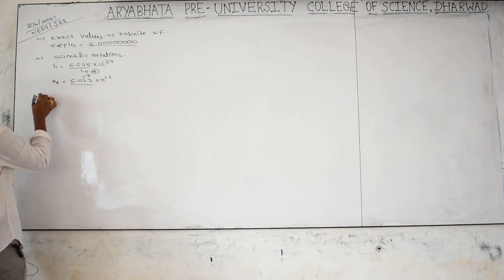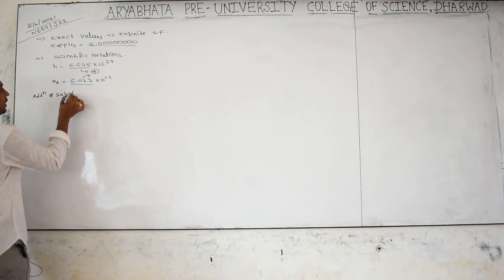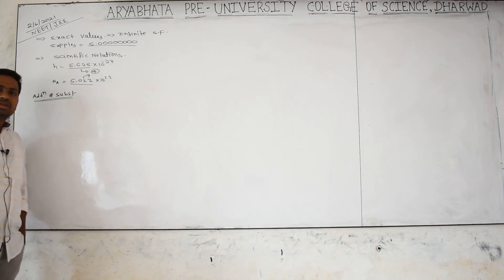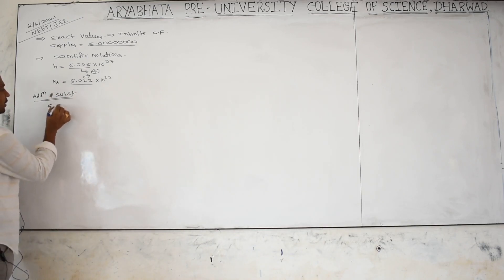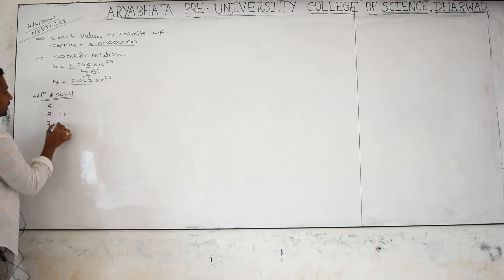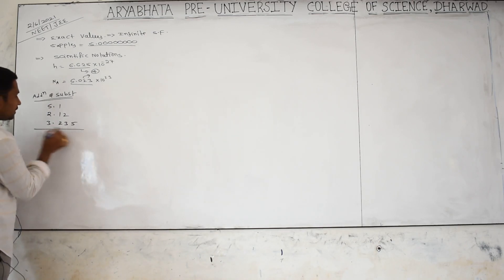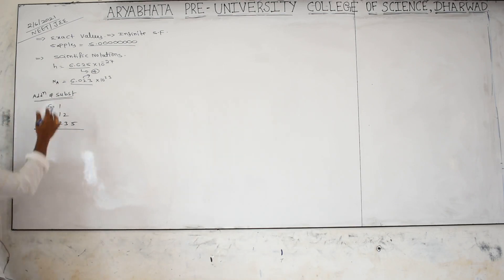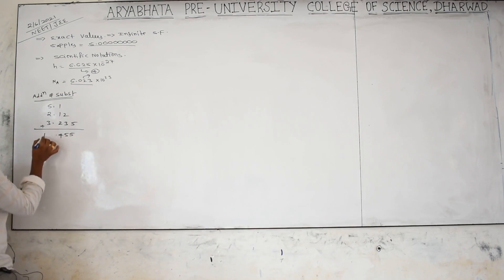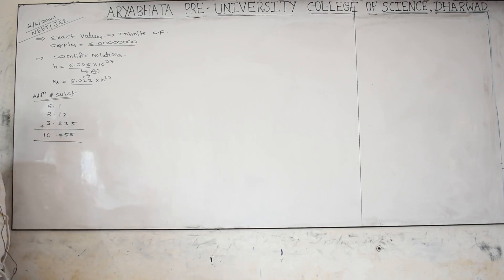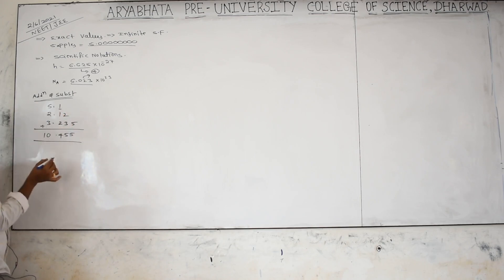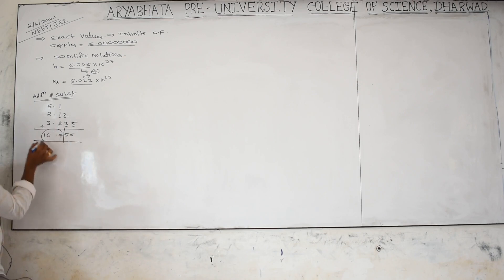Under significant figures, we have two concepts: addition/subtraction and multiplication/division. For addition and subtraction, for example you have 5.1, 2.12, and 3.235. First you add them and get 10.455. But five significant figures in the answer is wrong. Among the added values, which has the least number of digits after the decimal? Only one digit — so the answer has to be rounded to one digit after the decimal point, giving 10.5, which has three significant figures.